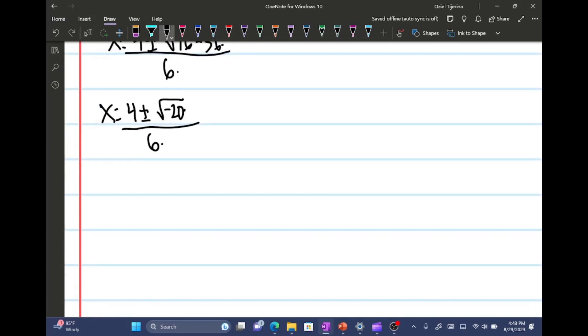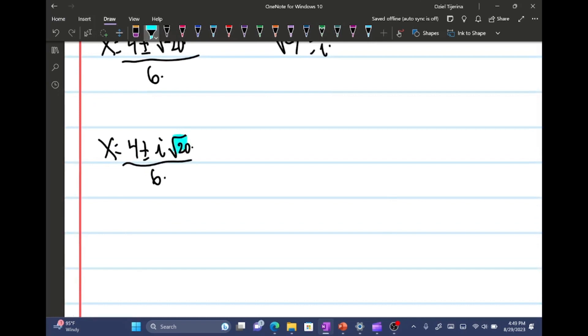And notice that we have a negative there, so I'm gonna say x equals 4 plus or minus, and in case y'all didn't know, the square root of negative 1 is i. So it's gonna be plus or minus i, and then square root of 20 all over 6. And now we just have to simplify this part. So the square root of 20 is really the square root of 4 times the square root of 5, which is equal to 2 square root 5. So we're gonna put this in for the square root of 20.